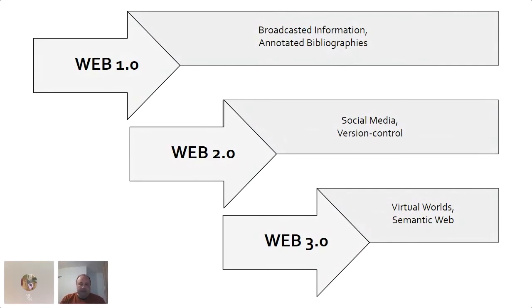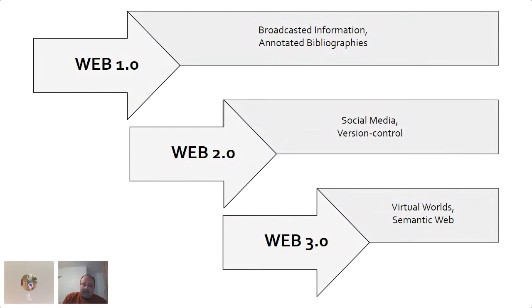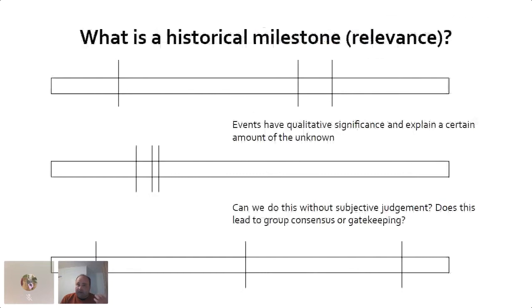Then we had Web 2.0, which evolved with the advent of social media platforms from the early 2000s to more or less today — social media, version controls, and other technology. And then we're moving towards Web 3.0, which involves even more advanced technological innovations like virtual worlds and the semantic web.